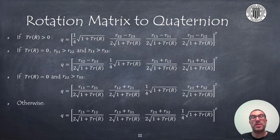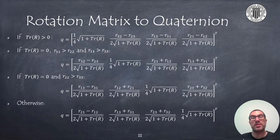If the trace is greater than zero, we can apply the first provided expression to compute the quaternion. However, if the trace is zero or numerically close to zero, we should apply one of the other three expressions. In that case, we must identify which is the largest element in the trace and apply the corresponding formula. These formulas are provided here just for reference — you don't need to remember all these expressions; just look them up when you need them.